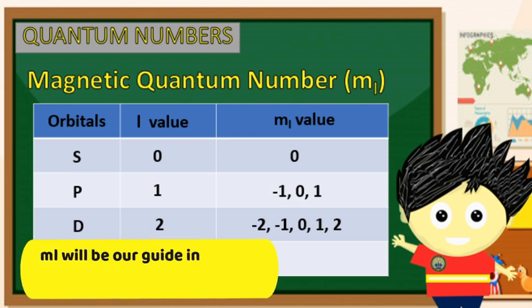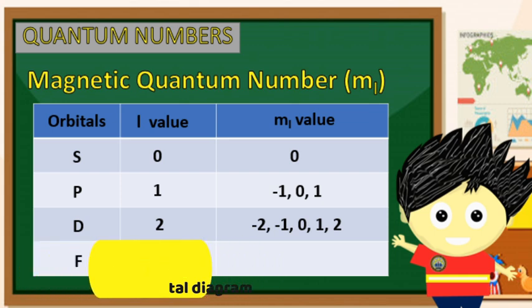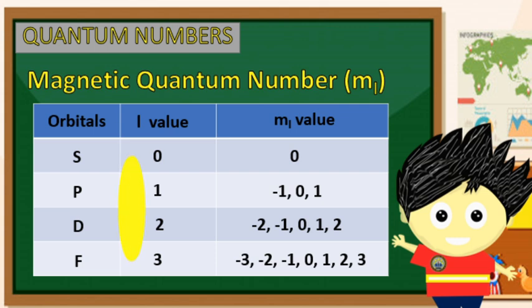Eksakto ito sa sinasabi natin na ang d ay may limang orbital sa bawat energy level. At huli ay ang f-orbital na may L value na 3, kung saan ito ay may ml value mula negative 3, negative 2, negative 1, 0, positive 1, positive 2, hanggang positive 3 — na eksakto sa sinasabi ng f value, ay may pitong orbitals sa bawat energy level.